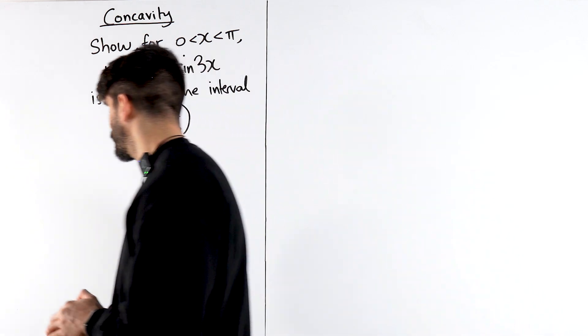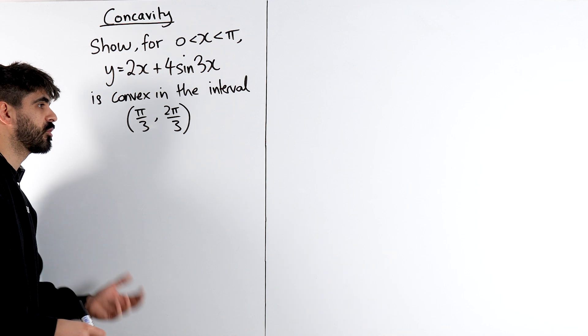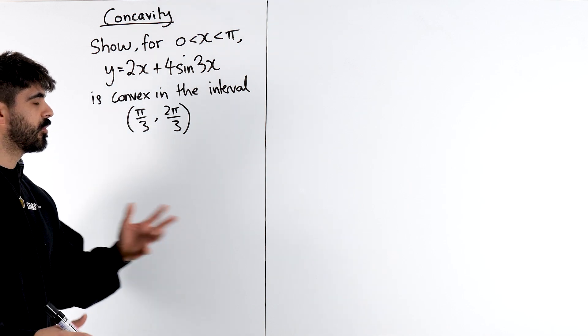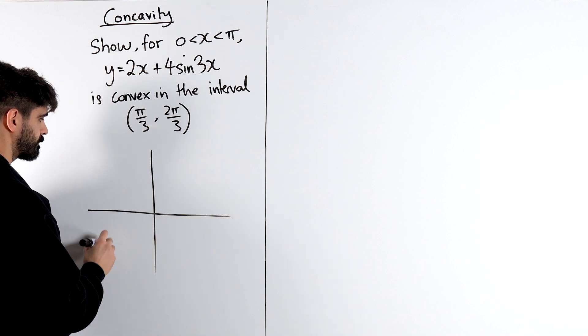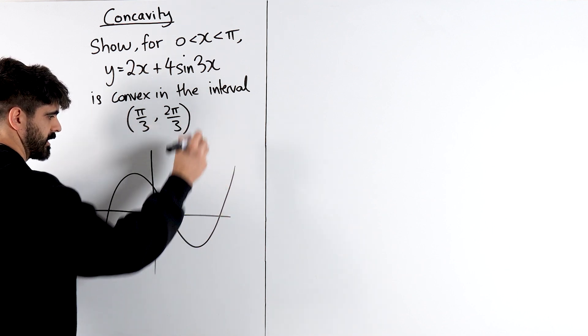So let's first discuss what it means for a graph to be convex, concave, or even have an inflection point. So I'm just going to draw a random cubic here. It looks like this.